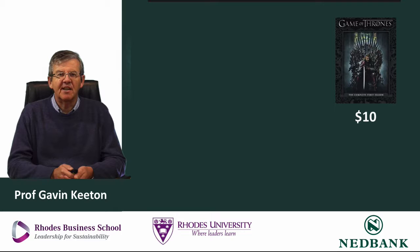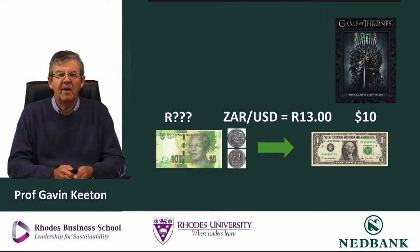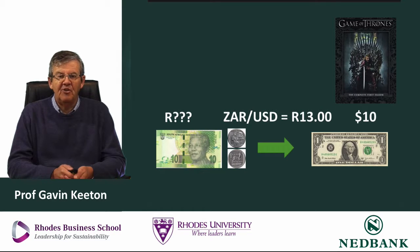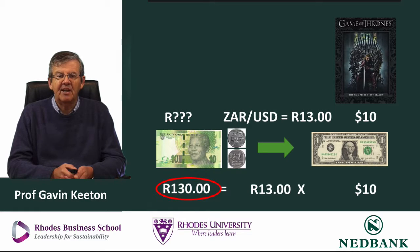Let's look at an example. You want to buy a DVD or TV series and it costs ten dollars. The exchange rate is 13 rand to the dollar, and you want to know how many rands it will cost you to buy that DVD. For every dollar you buy, you're going to have to pay 13 rand. You need to buy 10 dollars, so for each of those 10 dollars you pay 13 rand, meaning you'll pay 130 rand to buy that DVD. That's the import price we care about — not the 10 dollars, but the 130 rand.